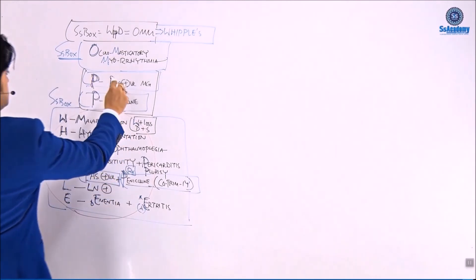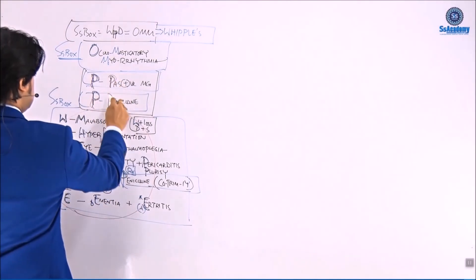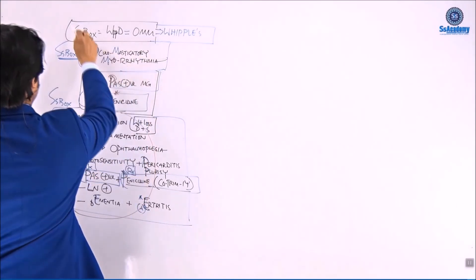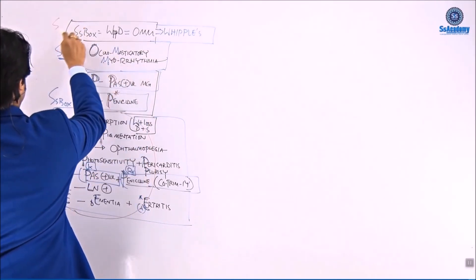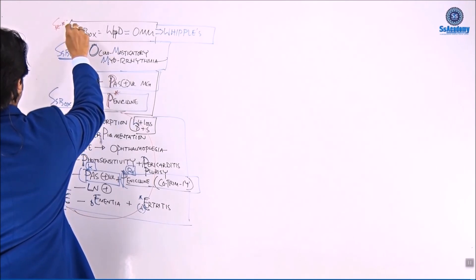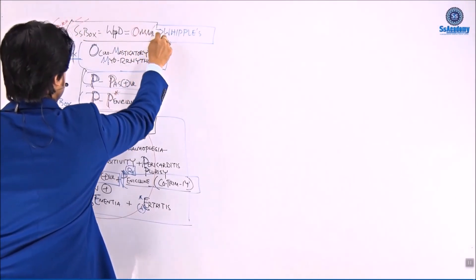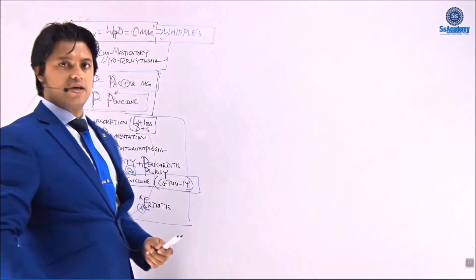But we must remember P for PAS-positive, P for penicillin is the treatment of choice. And oculomasticatory myorhythmia is a must to remember. That is O-M-M. And Whipple's itself is a mnemonic.